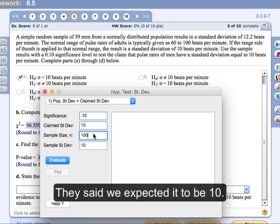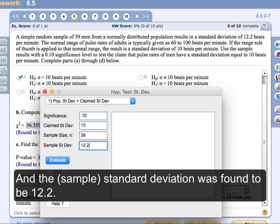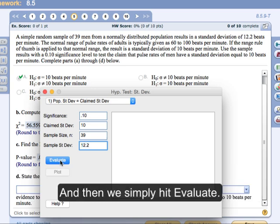They said that we expect it to be 10. The sample size was, at the very first sentence here, was 39. And the sample standard deviation was found to be 12.2. And then we simply hit evaluate.